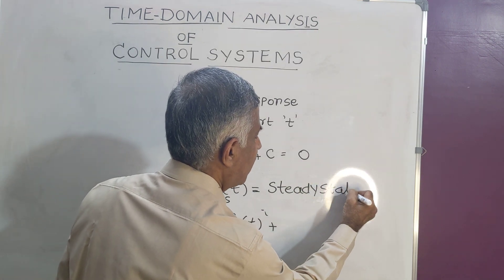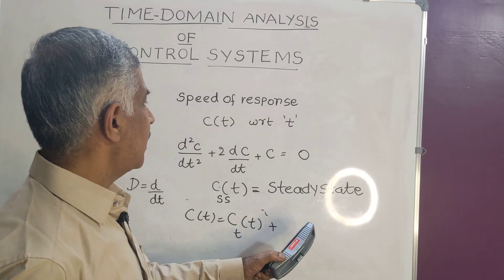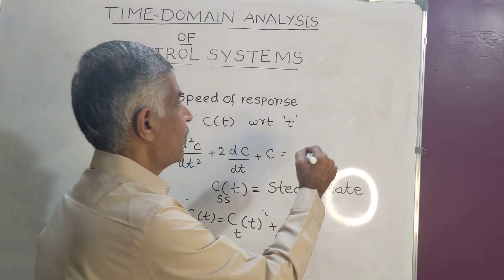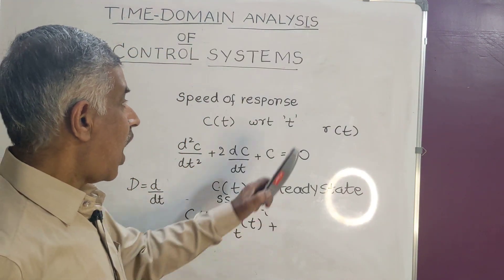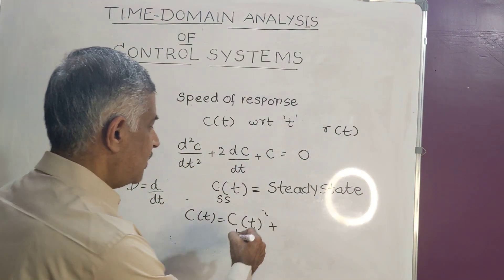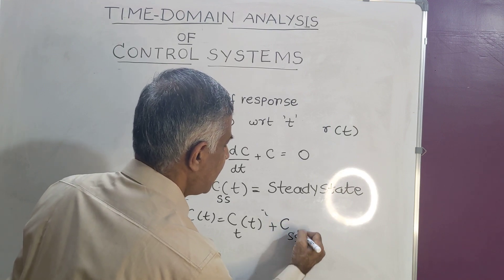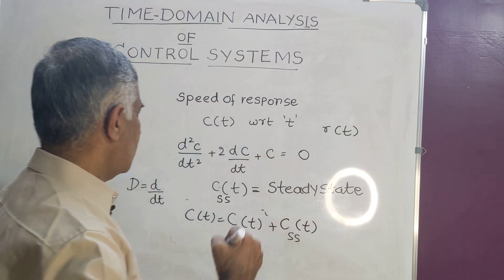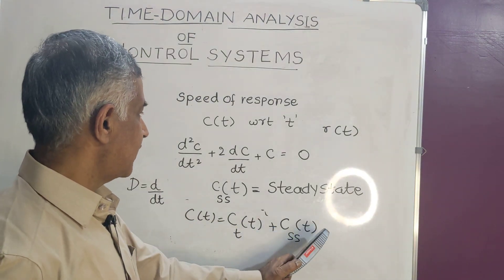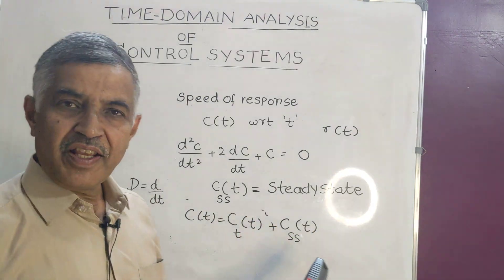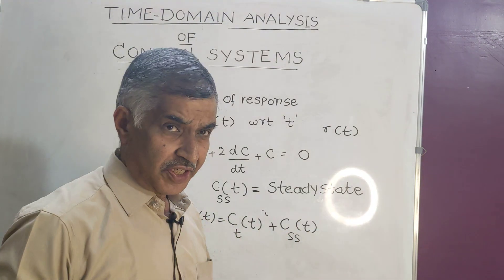The steady state response depends on the type of input r(t) we give. This part of the solution is written as c_ss(t). So the total response is: c(t) = c_t(t) + c_ss(t), where c_t(t) is the transient response and c_ss(t) is the steady state response.